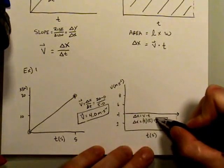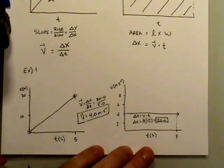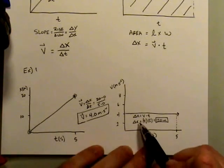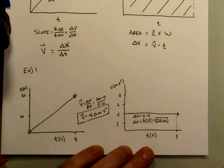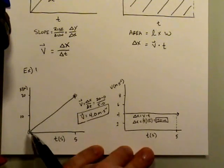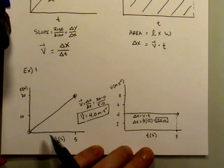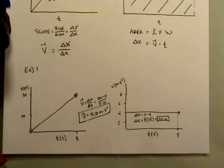This happens to be the final displacement only because my initial starting point was at 0. When your starting point is 0, the change in displacement equals the final displacement — 20 meters. If I had started at a different point, I would have had to find the final displacement by adding the change to the initial starting point.